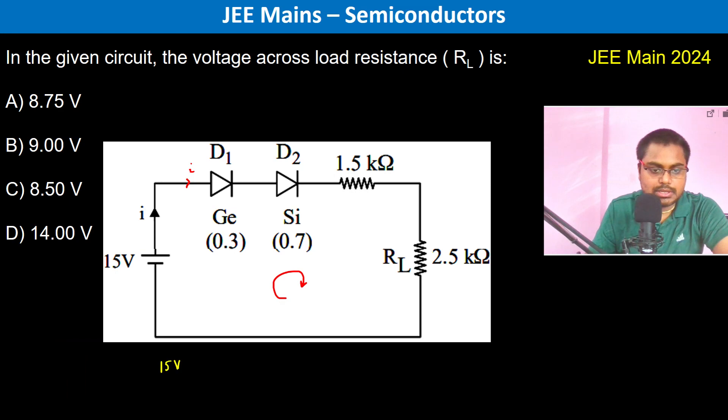So 15 volts minus 0.3 volts minus 0.7 volt, and the same current is going to pass through both of them. So minus I into 1.5 plus 2.5 kilo ohms, this is going to be equal to 0.